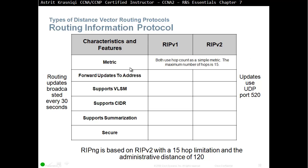RIPv1 and RIPv2 both use hop count as a simple metric. In section 7.1, we saw that RIPv2 would use a modem-speed link over a broadband-speed link simply because the modem link had fewer hops. The only reason it wasn't choosing the broadband path was because it had more hops. That's the problem — other protocols take bandwidth into account, which is very important. Both RIPv1 and RIPv2 have a maximum of 15 hops to the destination.